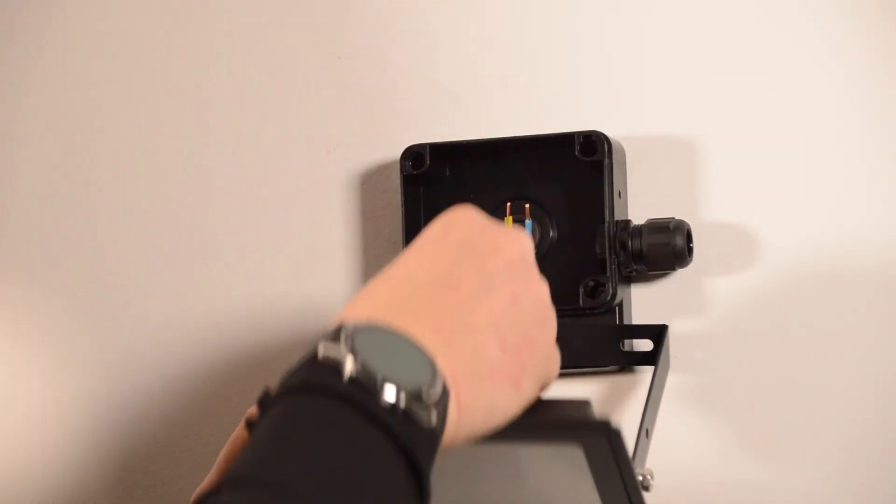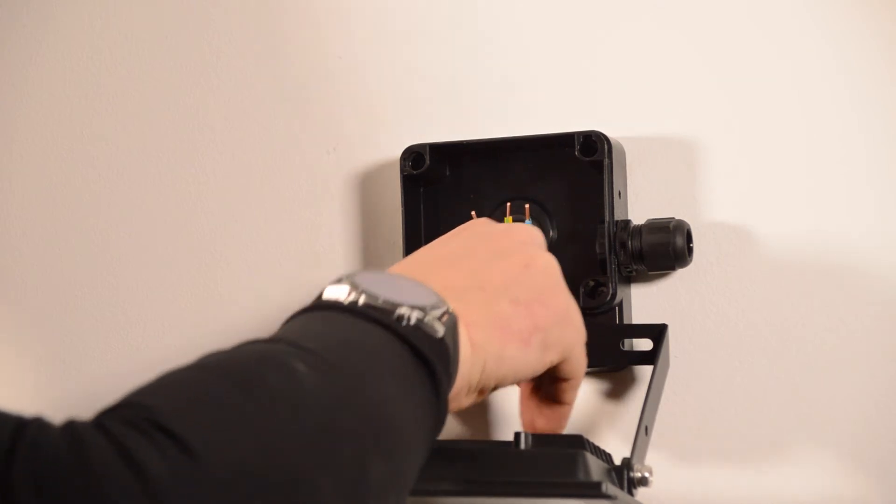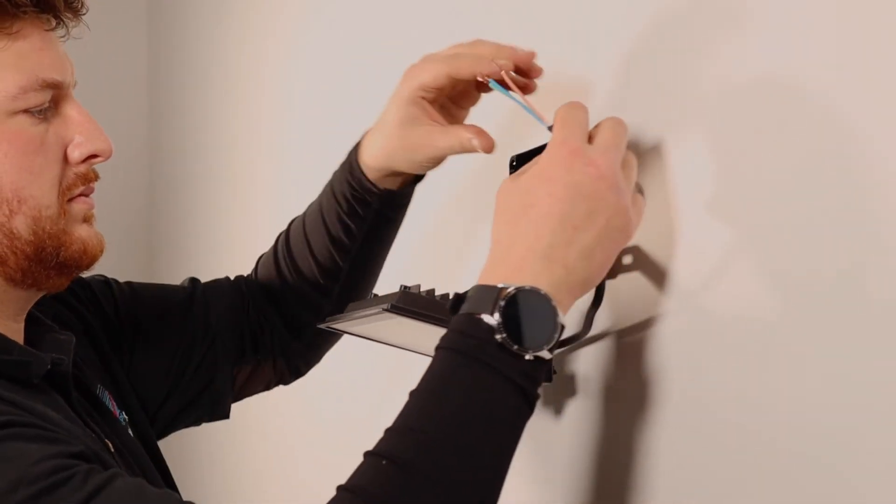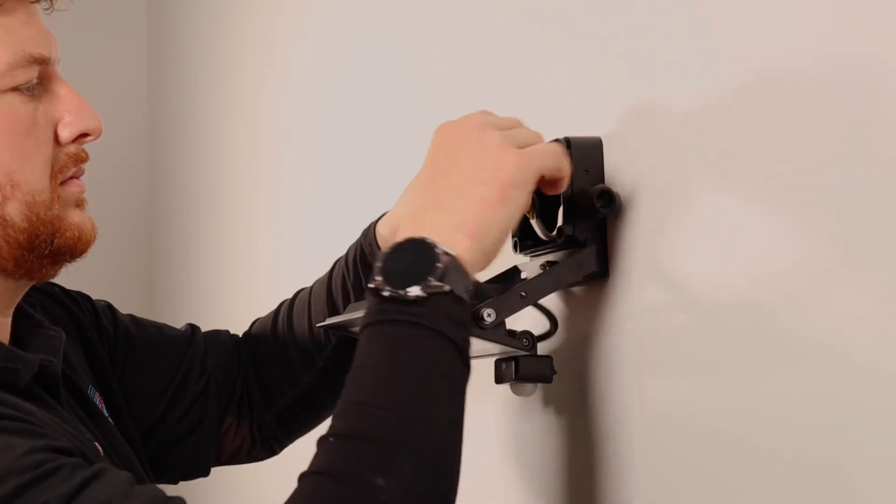Attach your chosen floodlight to the wall. Run your cable through the compression gland then tighten the compression gland.